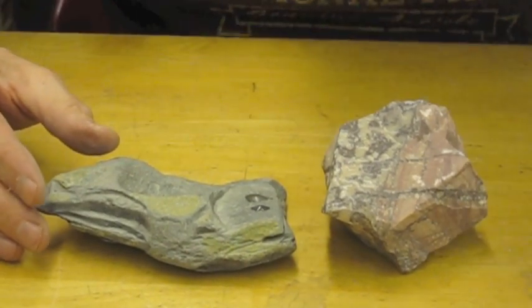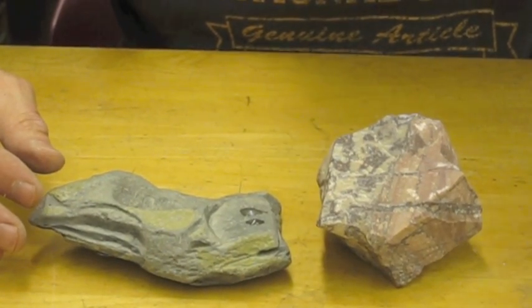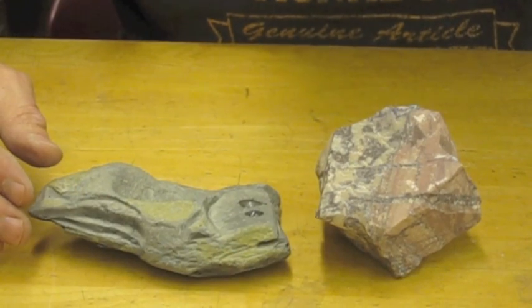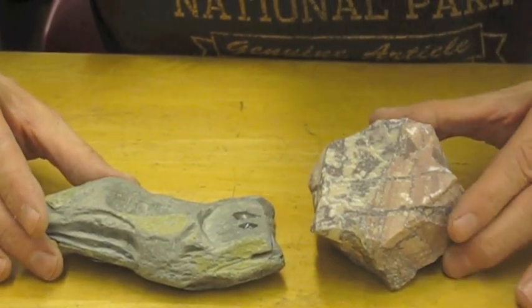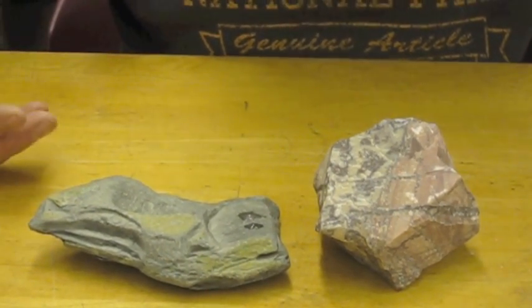These two rocks are dolomites. They're carbonates. It's not calcium carbonate. Some of the calcium is replaced by magnesium, so calcium, magnesium, carbon, and oxygen. They are deposited in sedimentary environments, warm, shallow waters, and sometimes they form by replacement of limestones.